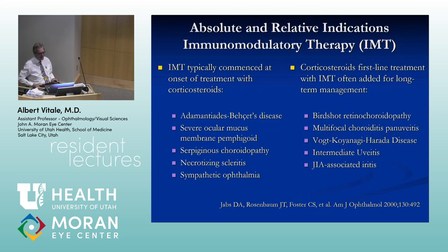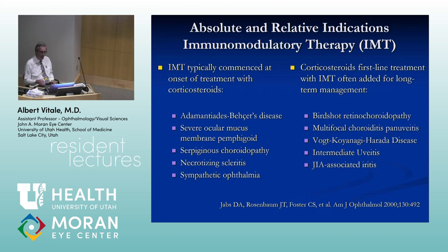Certain diseases need immunomodulatory therapy at the outset: Behcet's disease, severe ocular mucous membrane pemphigoid, serpiginous choroidopathy, necrotizing scleritis, and sympathetic ophthalmia. There are other diseases where early implementation may be beneficial in the long run: birdshot, multifocal choroiditis, VKH, certain cases with JIA, and some cases with intermediate uveitis.